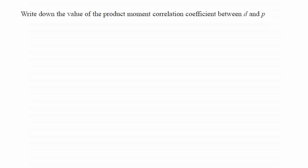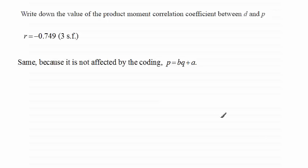Well, it turns out to be exactly the same as the correlation coefficient that we previously worked out in part B, that between D and Q. Turned out to be R equals minus 0.749 to three significant figures.